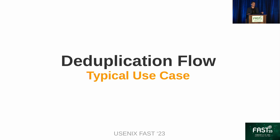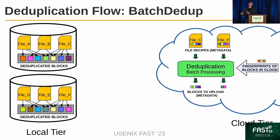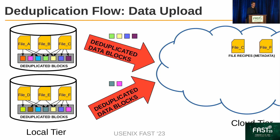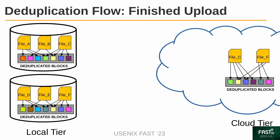Now I will present a typical deduplication flow in InfityDdub. We start with the local tier where data is already deduplicated, and we want to move selected files — say file C and file F — to the cloud. In the first step, we only move the file recipes to the cloud. File recipes are metadata containing a list of fingerprints of blocks that comprise the file. After the file recipes are moved to the cloud, we conduct deduplication by comparing the recently uploaded file recipes with fingerprints of data already in the cloud. The result is a list of blocks that need to be uploaded, which is sent back to the local tier, and finally the deduplicated data is uploaded to the cloud.